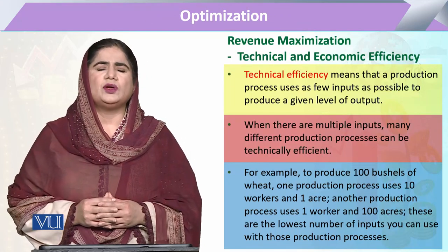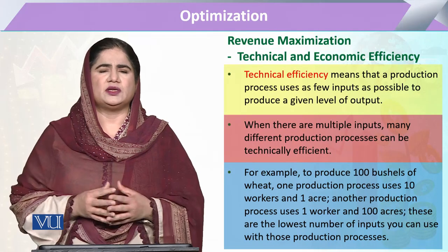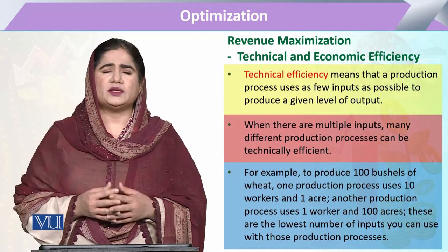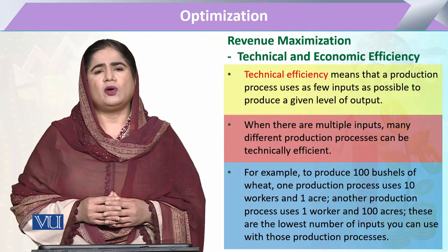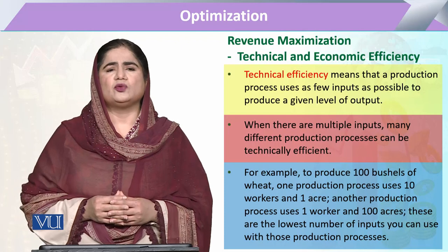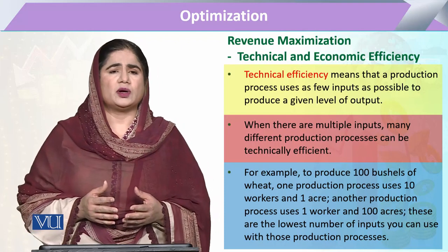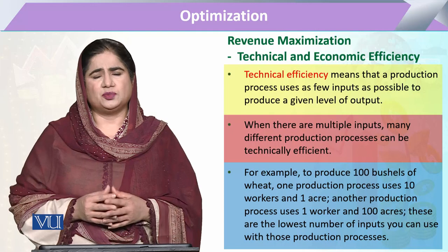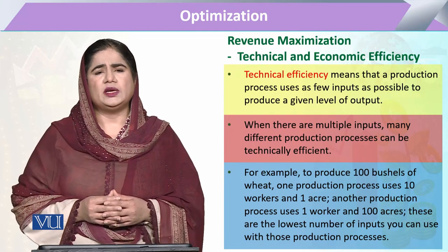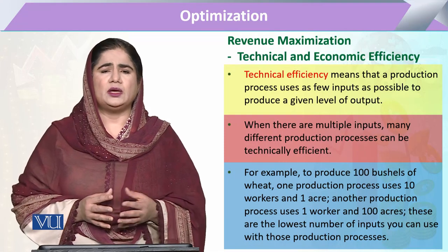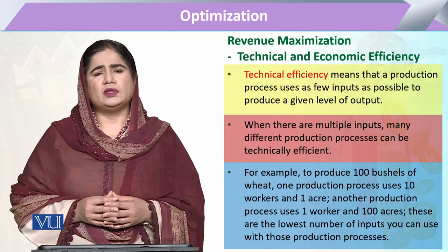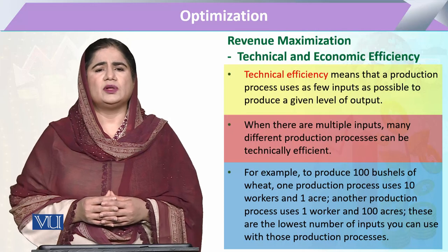When we use the term efficiency, it means enhanced productivity — the best production setup. When a person is more efficient, he gives more output compared to others. Similarly, when machine A is more efficient than machine B, it means machine A yields more output with less cost or less time.